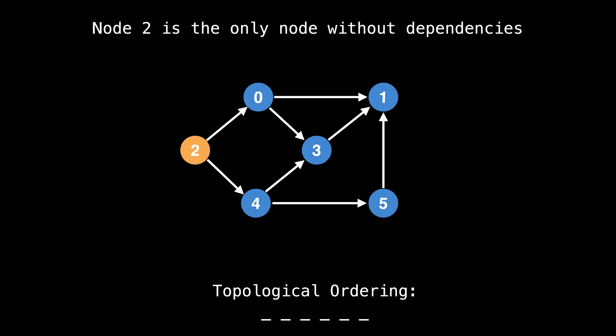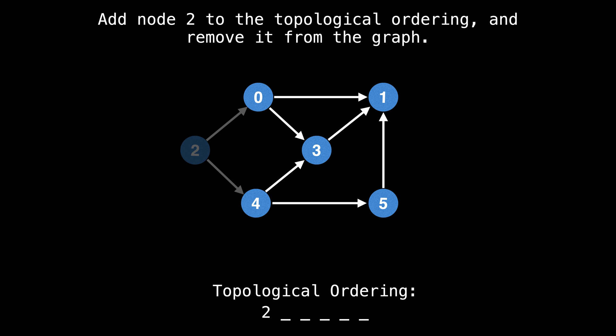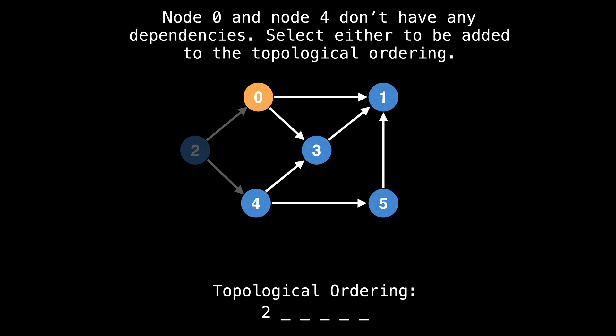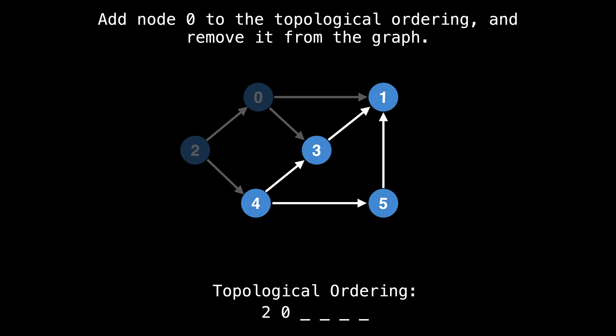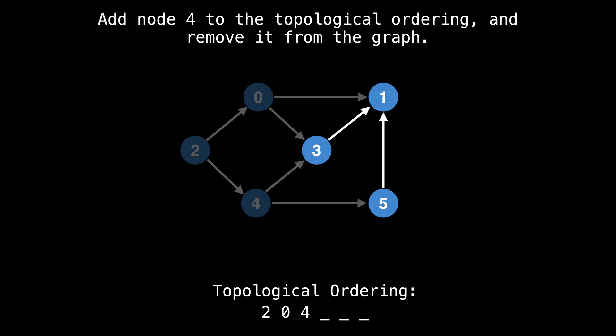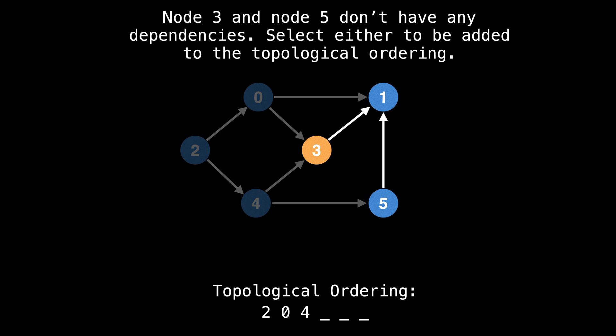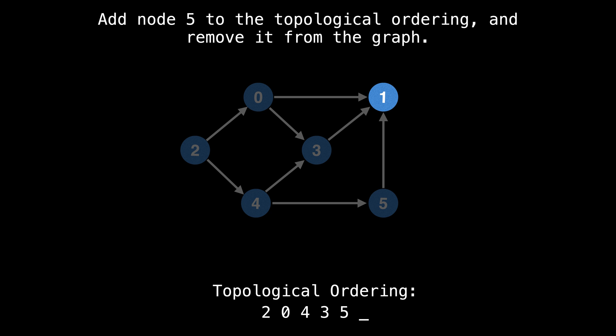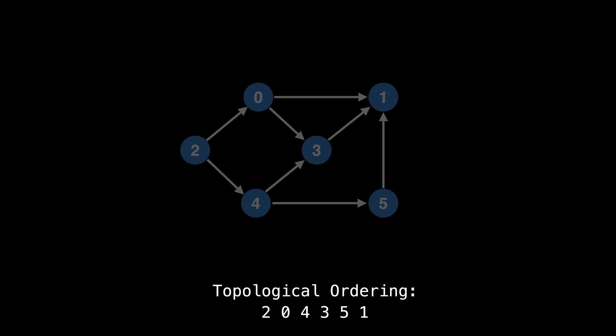We repeat this process of removing nodes without dependencies from the graph until all nodes are processed or a cycle is discovered. First, we would begin by selecting node two, since it is the only node without dependencies, then we would add node two to the topological ordering and remove it from the graph. Now node zero and node four don't have dependencies, so we can select either one. I selected node zero arbitrarily. This process continues until all nodes are removed from the graph, and that's Kahn's algorithm in a nutshell.